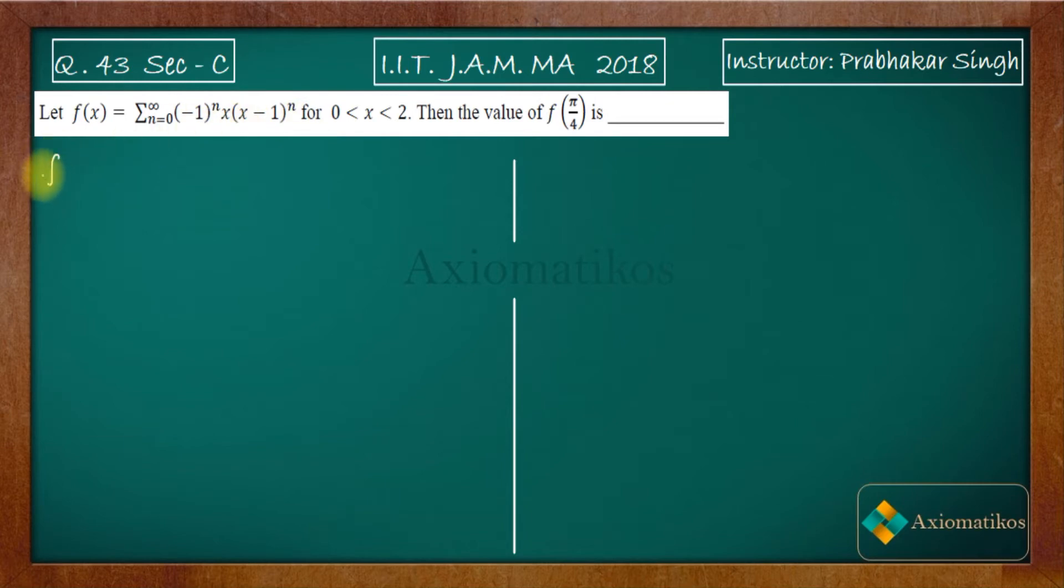So let us firstly see what is your f(x). The f(x) that you are given is n equals 0 to infinity, (-1)^n × (x-1)^n. Now see if you will write this thing by taking x outside and then start writing this. So first term will be (x-1)^0 and we have (-1)^0, so it will be positive.